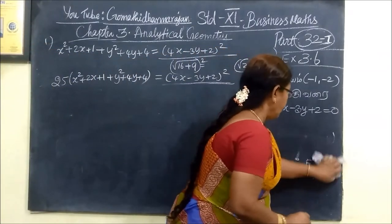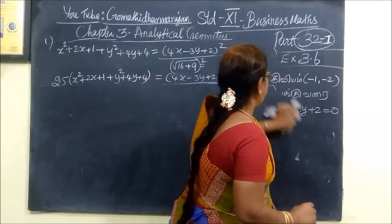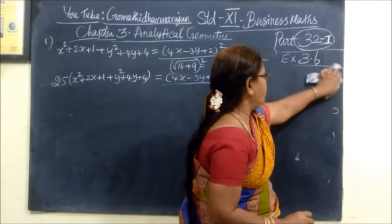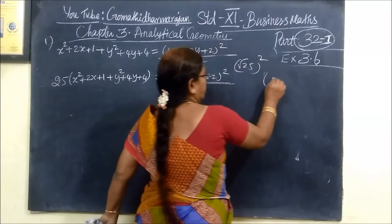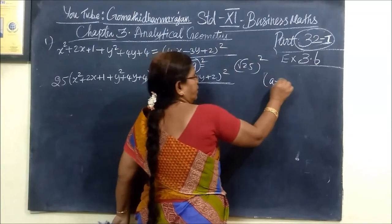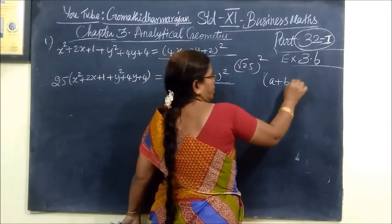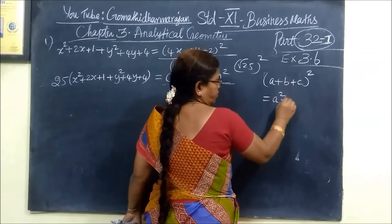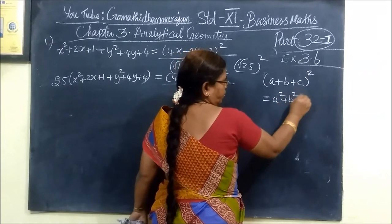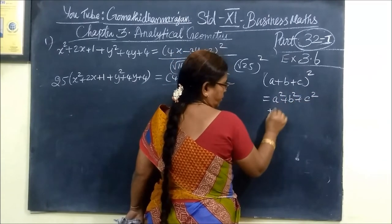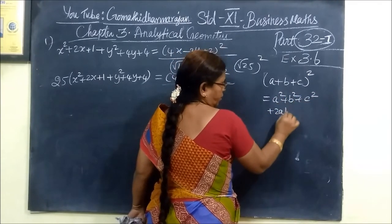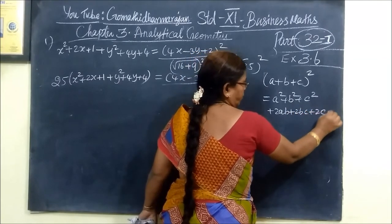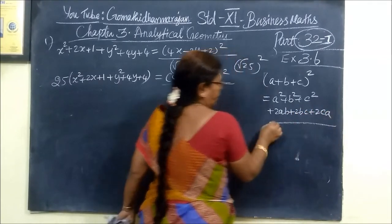We use the formula (A plus B plus C) squared equals A squared plus B squared plus C squared plus 2AB plus 2BC plus 2CA. Here A is 4x, B is minus 3y, and C is plus 2. Since B is negative, the signs change accordingly.